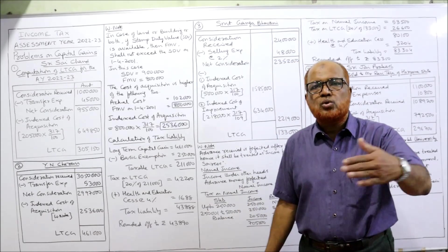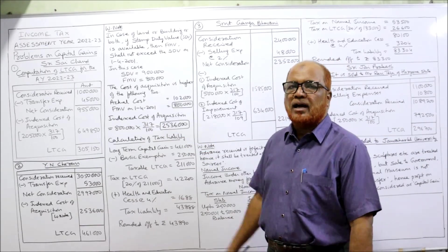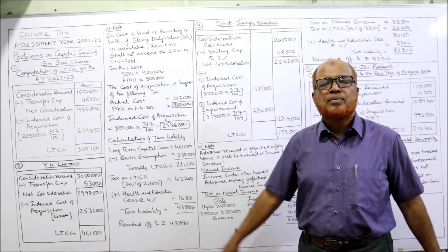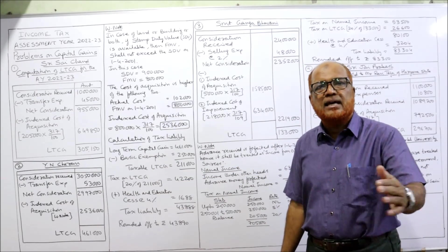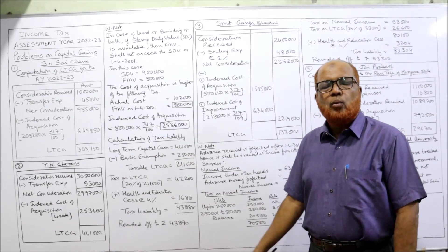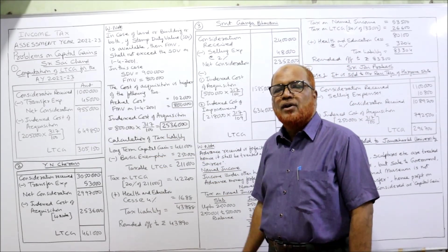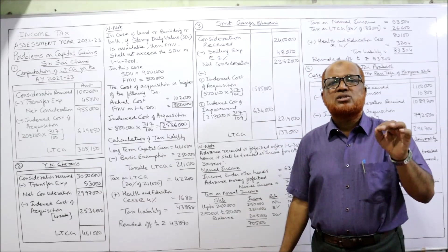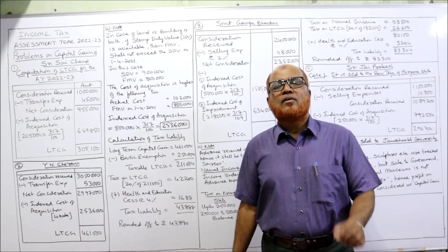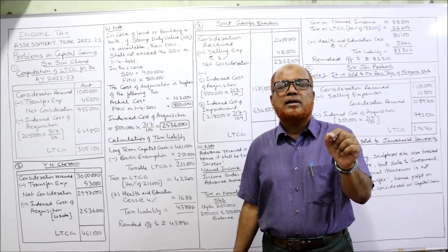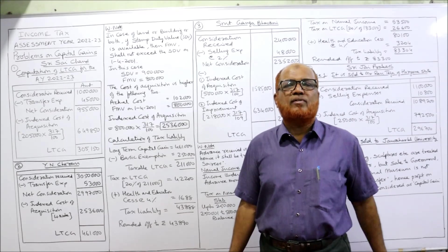Consideration received: he sold the gold ornaments for Rs. 10,00,000. That is the consideration received. From that, deduct the transfer expenses — selling expenses — Rs. 45,000. We get the net consideration of Rs. 9,55,000. From that, we deduct the indexed cost of acquisition. In the last video, I explained that for computing long-term capital gain, we have to calculate the indexed cost of acquisition.